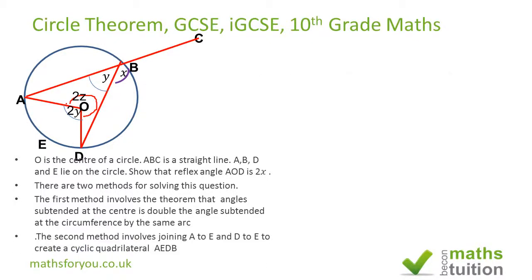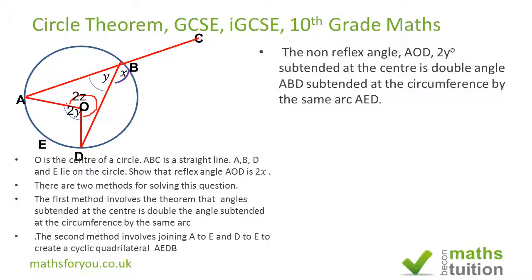This angle, which I've called 2Y, is subtended at the center by the arc AED. Now the same arc AED subtends the angle ABD at the circumference, and that angle is Y. Because the angle at the center is always double the angle at the circumference, angle ABD is now Y degrees.